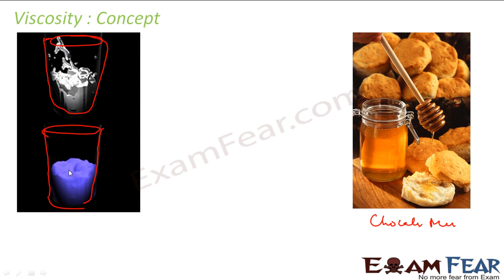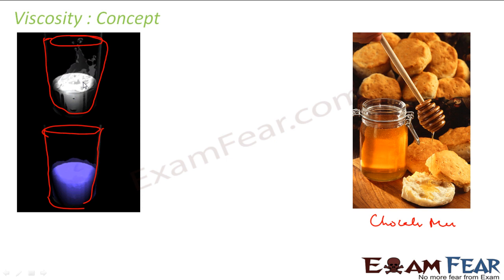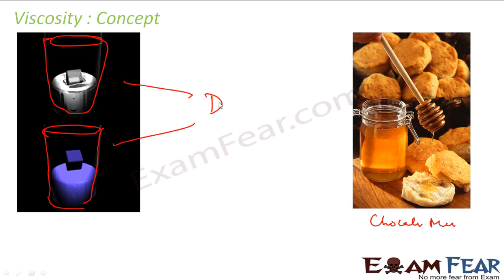For example, if you have thick mango juice, it won't splash out much. But if you have water or milk, it will splash out. That's the reason why we study viscosity — because different scenarios happen because different matter has different viscosity.